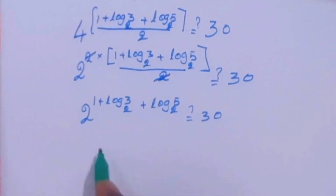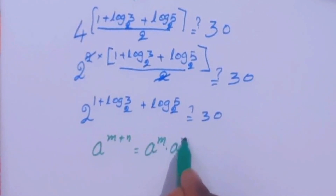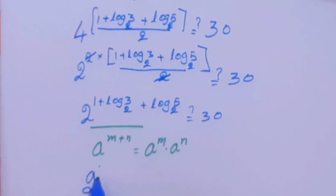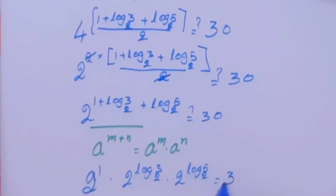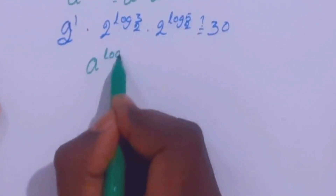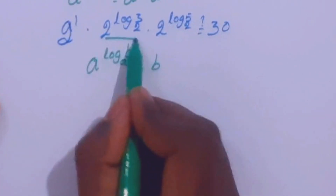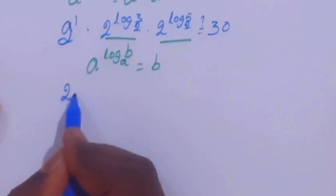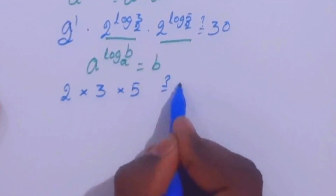We know that a power m plus n equal to a power m times a power n. Implementing here: 2 power 1 times 2 power log 3 base 2 times 2 power log 5 base 2 equal to 30. Using the identity a power log base a of b equal to b, this becomes 2 times 3 times 5 equal to 30. This confirms our answer is correct.